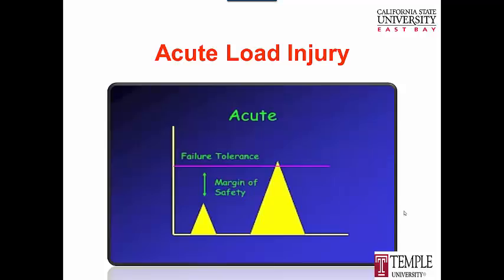Let's look at frameworks for injury. You can have what we probably all think of as injury: an acute load injury. Somebody's leg is pointing the wrong way — something was broken after a collision. In terms of tolerance and loading, we put a tolerance line representing the strength or failure tolerance of the tissue. We typically load the tissue well below that line, giving a margin of safety. But if somebody pushes you down the stairs or hits you on the soccer field and your load just for an instant exceeds that tolerance, that is the definition of an acute injury.